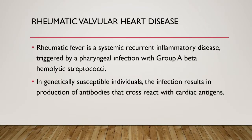Welcome to the two-minute series. Today's topic is rheumatic valvular heart disease. Rheumatic fever is a systemic recurrent inflammatory disease triggered by a pharyngeal infection with group A beta-hemolytic streptococci. Not all people who suffer from pharyngitis develop rheumatic heart disease — only genetically susceptible individuals produce autoantibodies that cross-react with cardiac antigens.